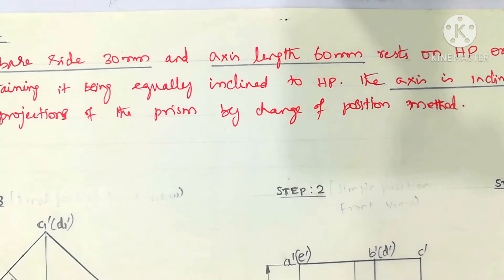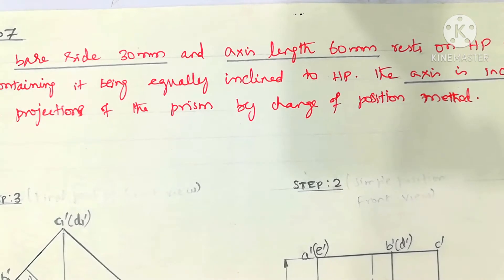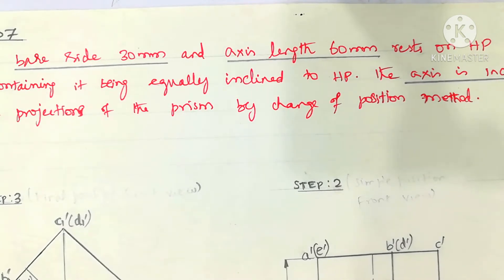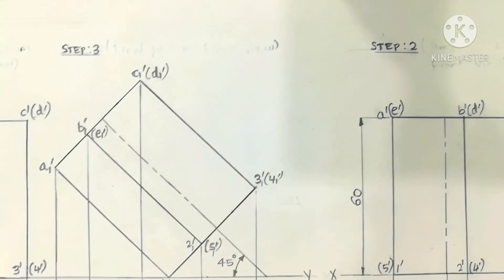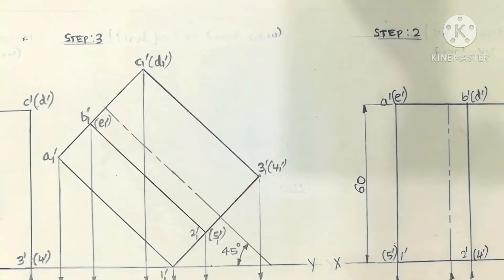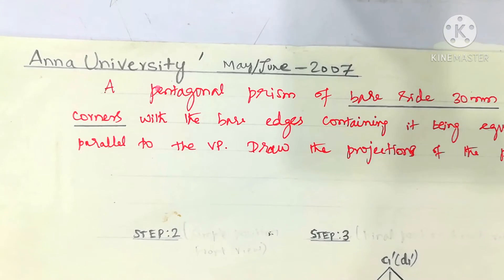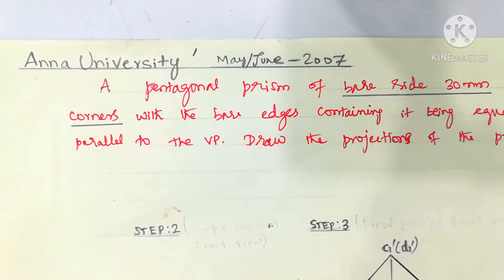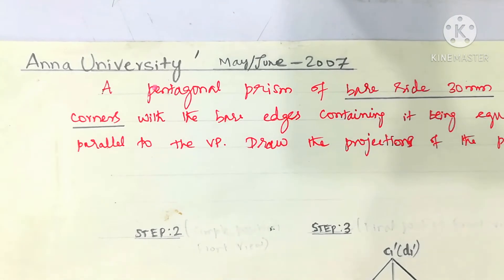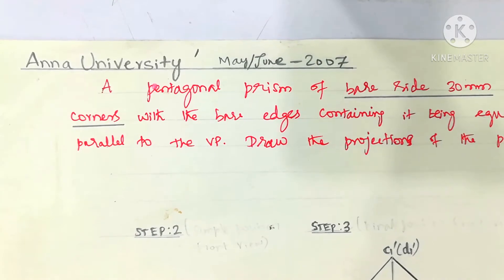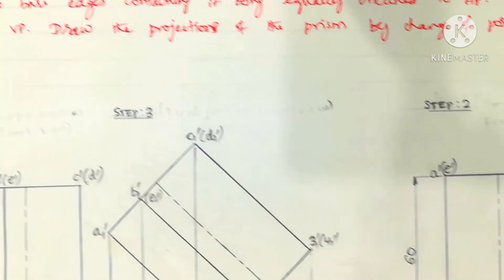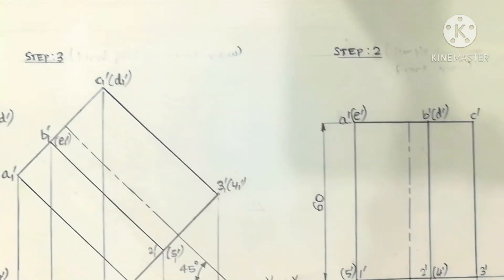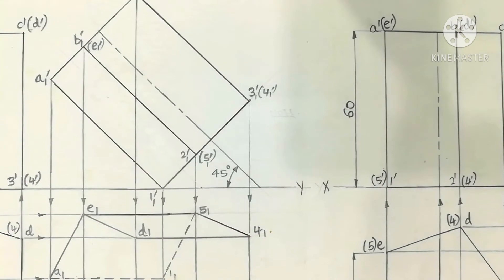The normal method we follow in projection of solids is called the change of position method. The corresponding answer diagram is shown here. This is about a pentagonal prism. This question appeared in Anna University May-June 2007 examinations, and the answer showing how it appears when drawn on the drawing sheet is shown clearly.